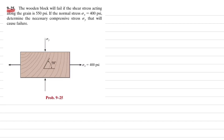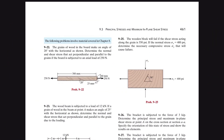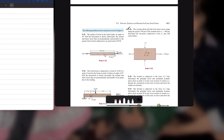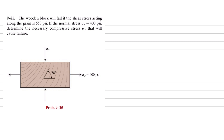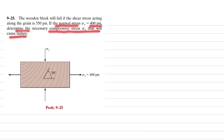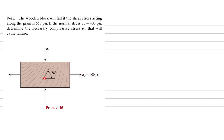Welcome back. Problem 9-25 is taken from Chapter 9, which covers principal stresses and maximum in-plane shear stress. The problem states: a wooden block will fail if the shear stress acting along the grain is 550 psi. If the normal stress is 400 psi, determine the necessary compressive stress sigma_y that will cause failure. Sigma_x is 400 psi, sigma_y is the unknown compressive stress, and the shear stress tau_x'y' along the grain is 550 psi.